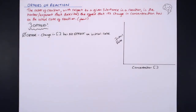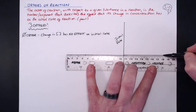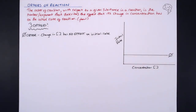A zero order basically means that a change in concentration of a reactant has no effect on the initial rate of reaction — no effect whatsoever. We can double, triple, quadruple the concentration of this reactant that has a zero order, and it will not have any effect on rate. So in terms of a graph, we can increase concentration from left to right all we like, but there is zero effect on the initial rate — it's not going to get any quicker, no matter how much you increase the concentration of that reactant.